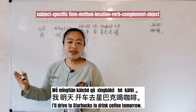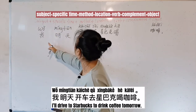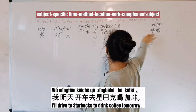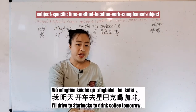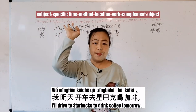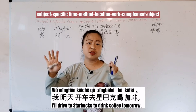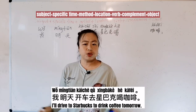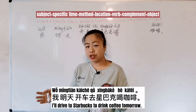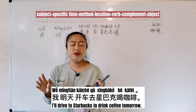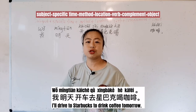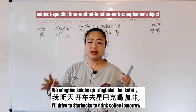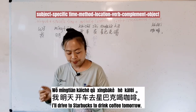So you can see that with just these six elements, we can make a lot of sentences in Chinese using around 200 to 500 Chinese words. You don't really need a lot of words to speak Chinese. What's more important is to put them in the right order.